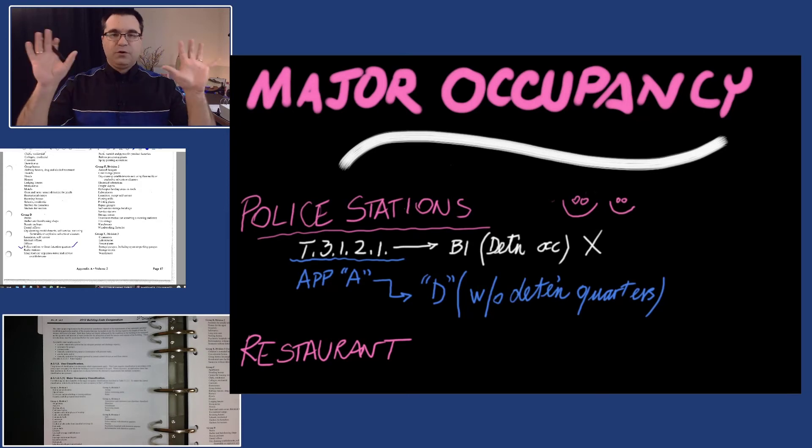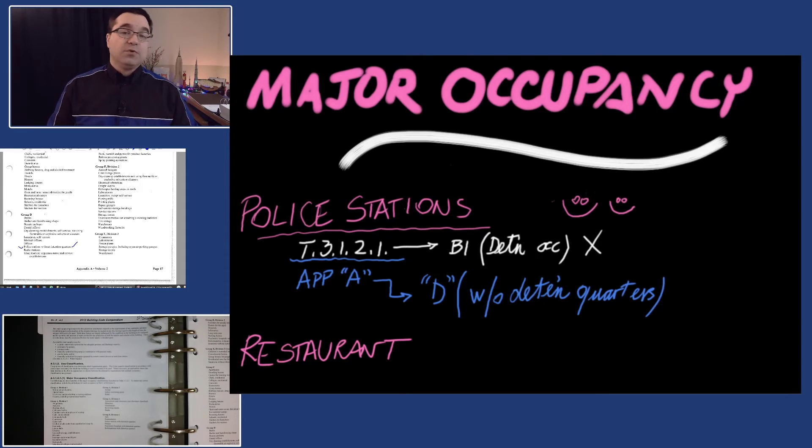I know I was sneaky. I purposely picked this occupancy to make a point that you want to start with Appendix A and not Table 3.1.2.1, especially if you're just starting with the Ontario Building Code. What would you do if you received something like this on a test or exam? It would be perfectly fair to ask questions to get clarifications, because you're getting police stations in two different occupancies. If you're not allowed to ask questions, you can make assumptions. It's perfectly valid to assume this police station has detention occupancies.